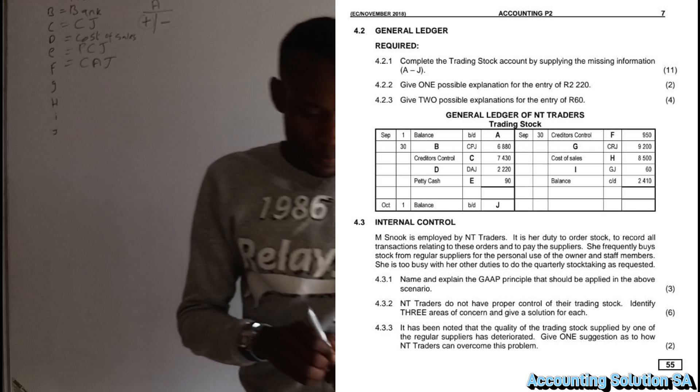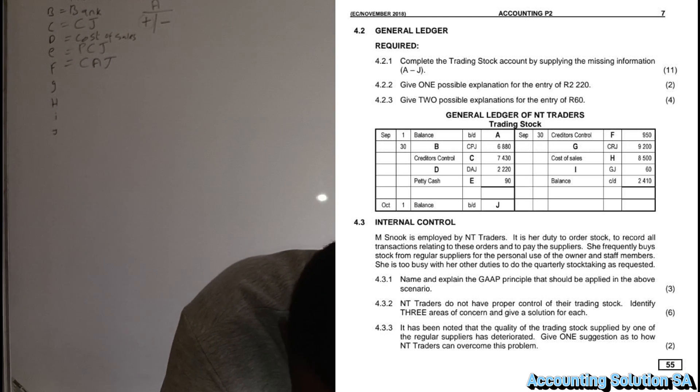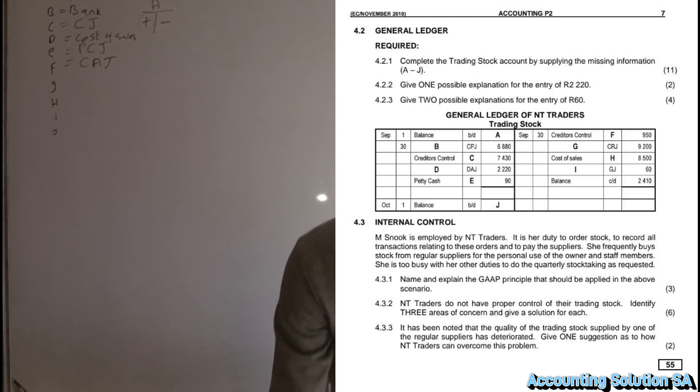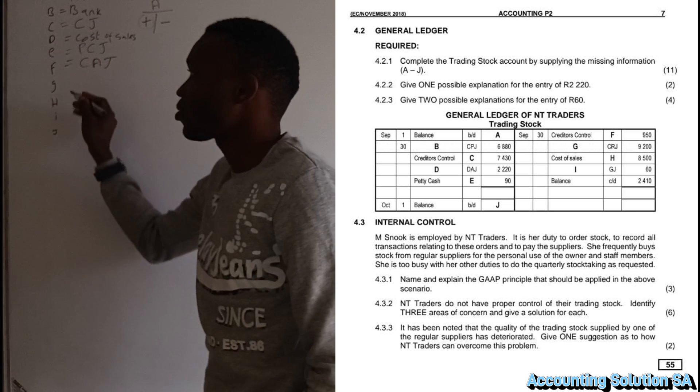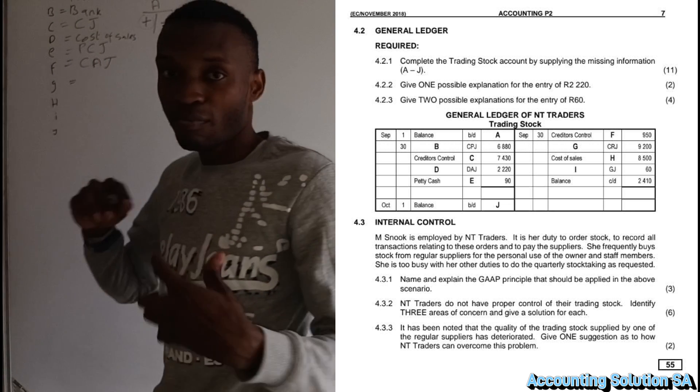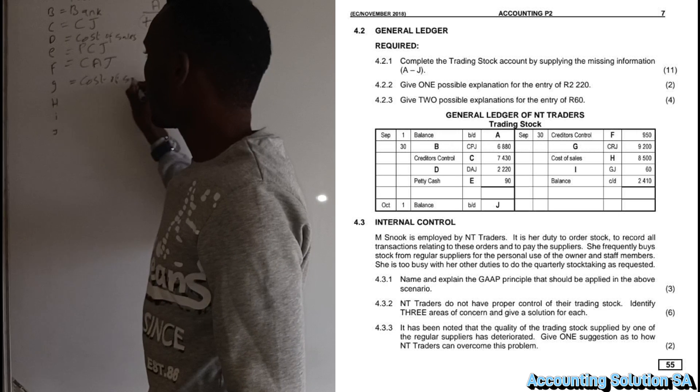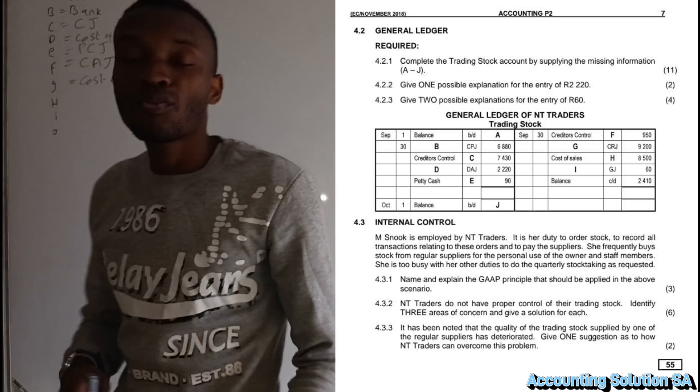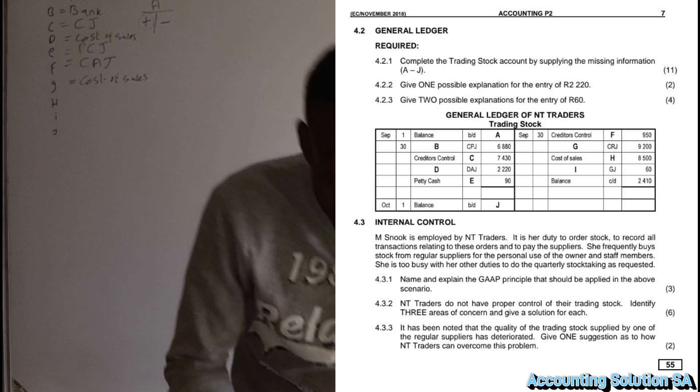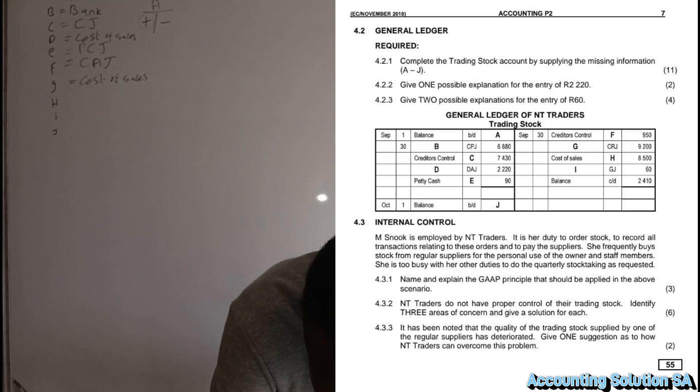Then the following one, we have cash receipts journal. We have to record the cost of sales, not sales guys. We receive money, which means that we have to apply cost of sales. The reason is because this is under the account of trading inventory.